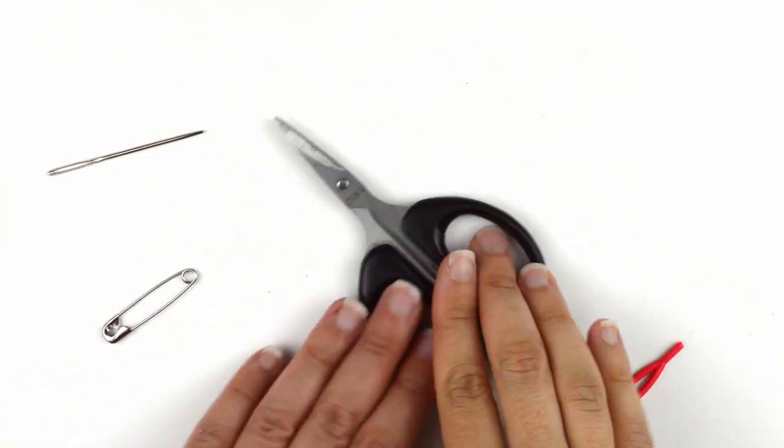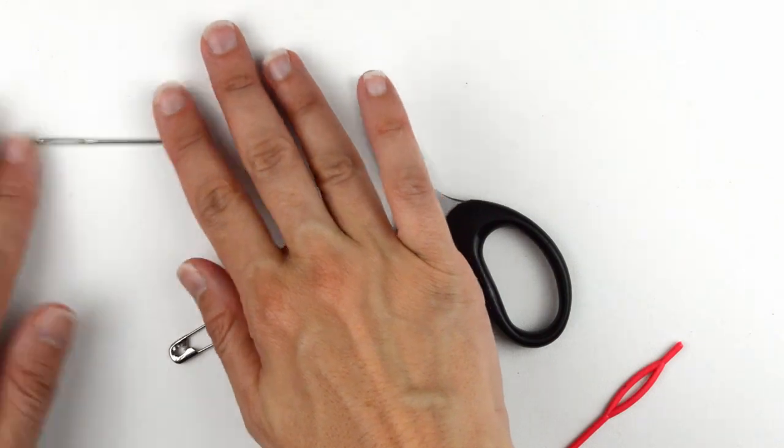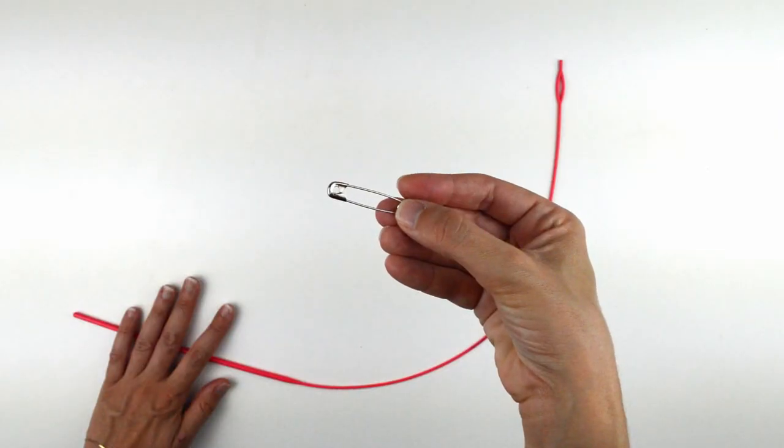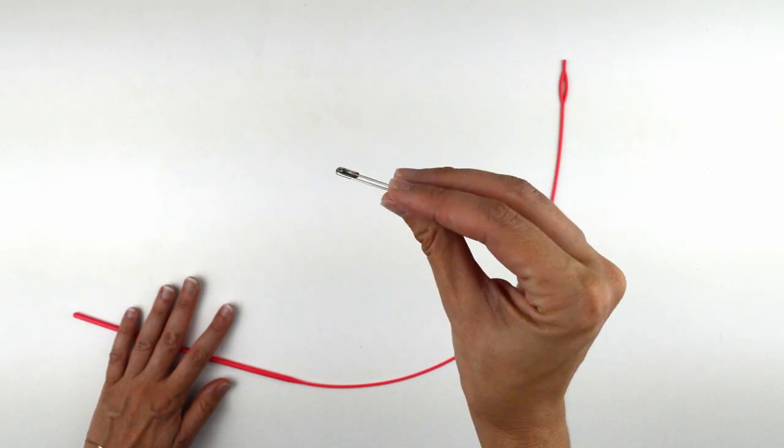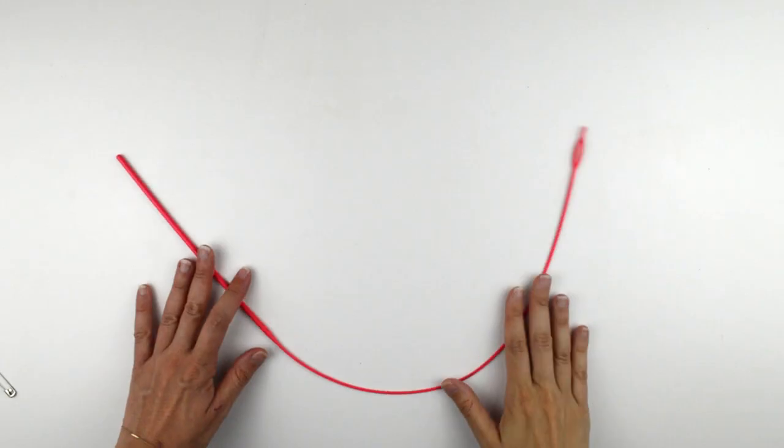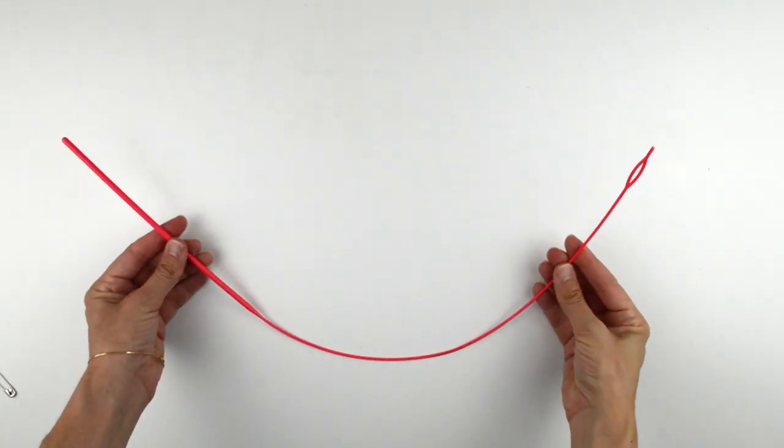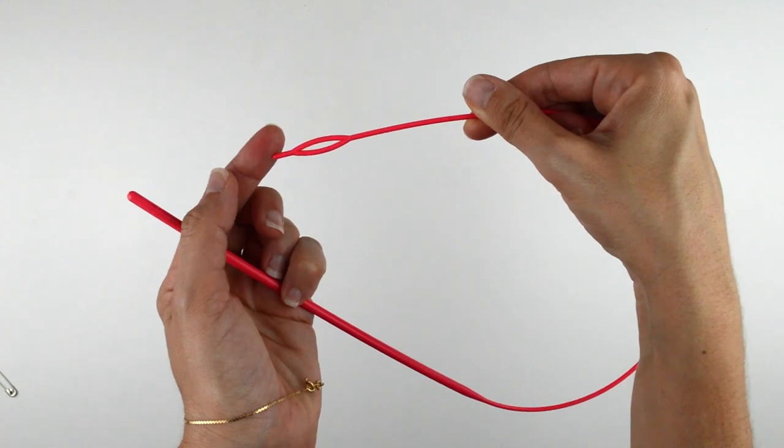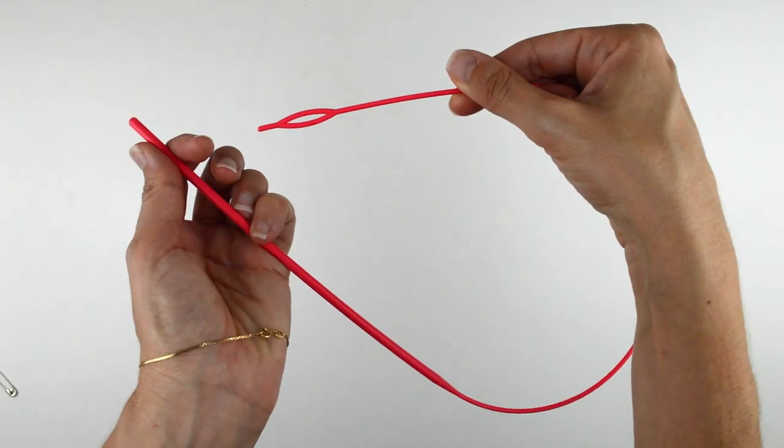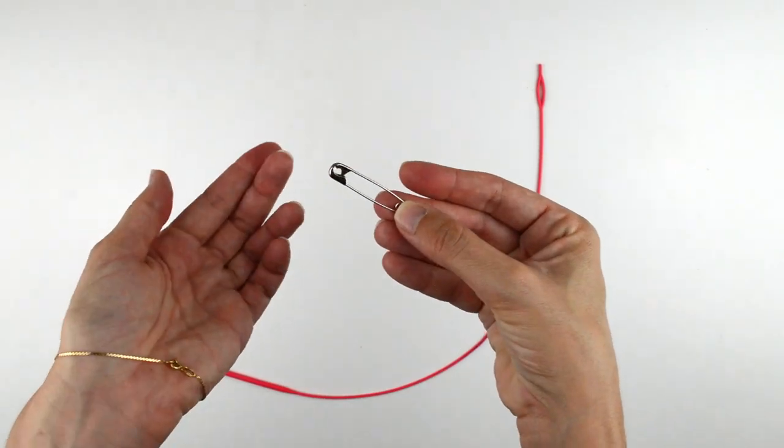You'll also need some scissors, a tapestry needle to sew in your ends, and if you're planning on turning your cord into a drawstring, you'll need a large safety pin to thread it. I also have one of these very handy drawstring threaders, which I highly recommend as a staple in your sewing kit, but you can make do with just a safety pin if you don't have one.